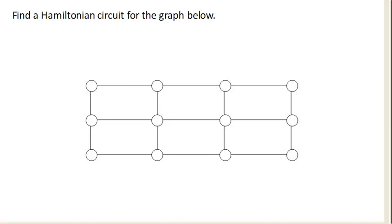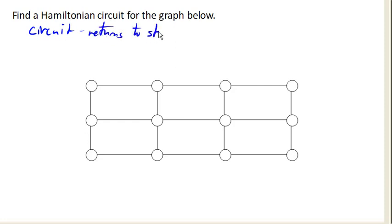Here we want to find a Hamiltonian circuit for this graph. A Hamiltonian circuit is first and foremost a circuit, which means that it's a path that returns to the starting point. Now, you might remember an Euler circuit was one that covered every edge exactly once, and we didn't care about the vertices.